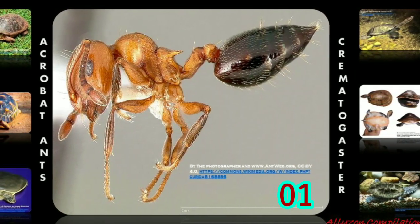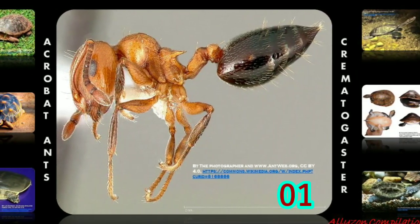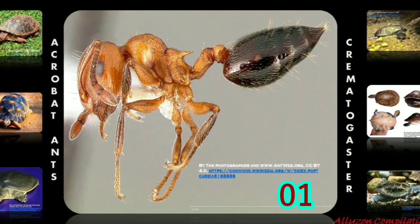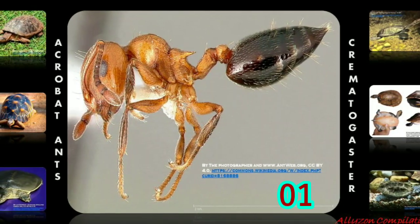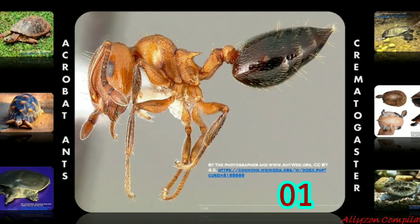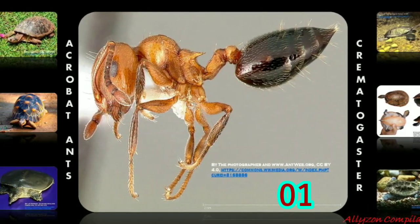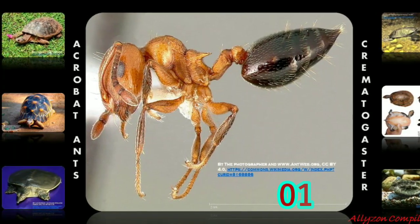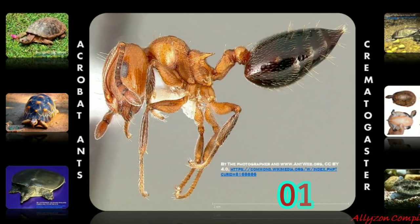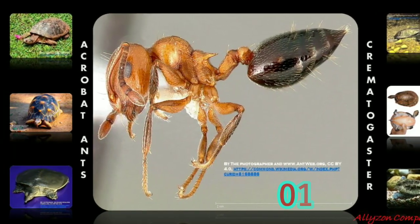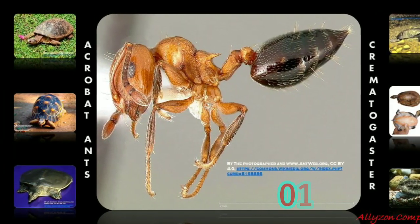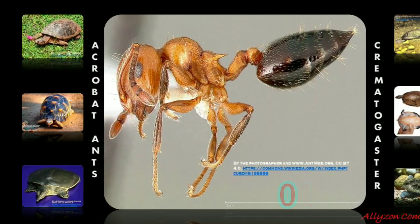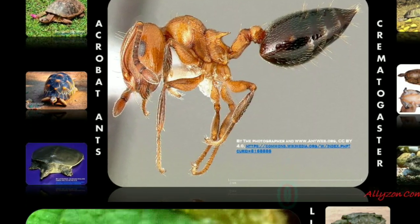Indoors, nests have been found inside homes around electrical wires. Acrobat ants, or Crematogaster, get their name from their habit of acrobatically raising their abdomen above their head, especially when they are disturbed. When viewed from above, the abdomen is heart-shaped.